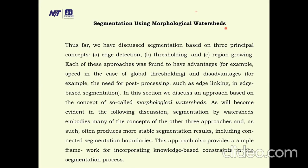Today's topic is segmentation using morphological watershed. Thus far we have discussed segmentation based on three principal concepts: edge detection, thresholding, and region growing. Each of these approaches has advantages and disadvantages and may require post-processing such as edge linking. In this section we discuss an approach based on morphological watershed, which embodies many concepts of the other three approaches and often produces more stable segmentation results including connected segmentation boundaries. This approach also provides a simple framework for incorporating knowledge-based processing.